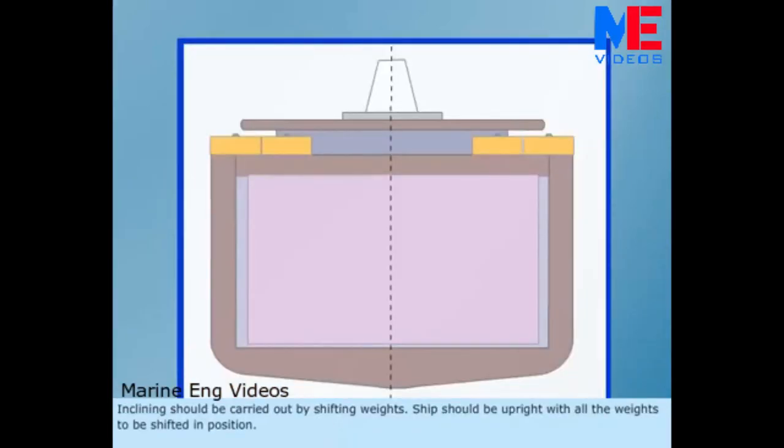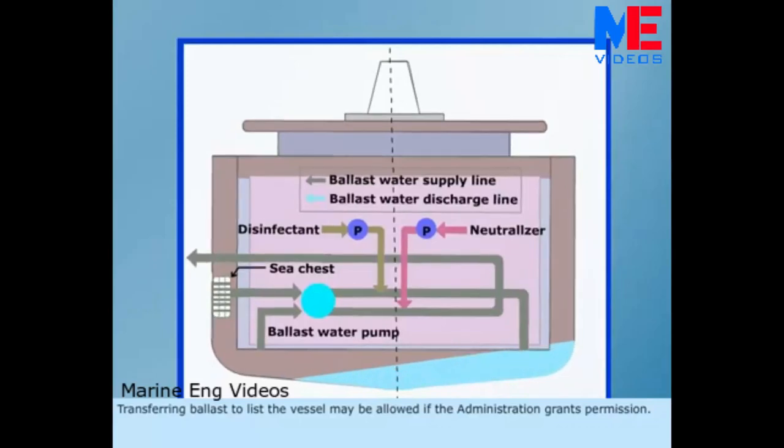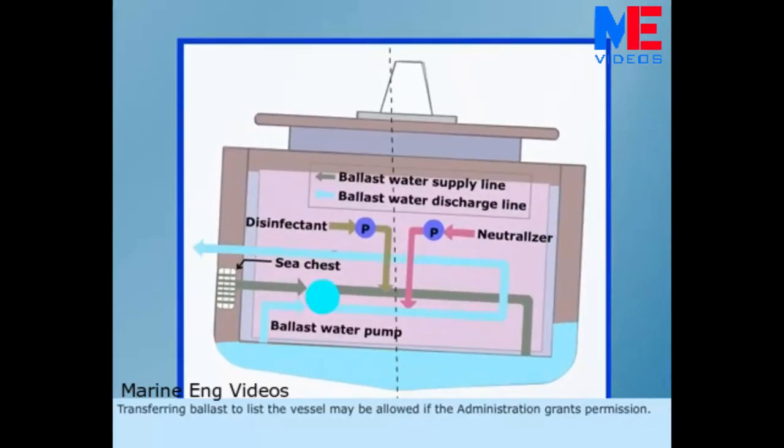Inclining should be carried out by shifting weights. Ship should be upright with all the weights to be shifted in position. Transferring ballast to list the vessel may be allowed if the administration grants permission.